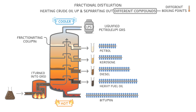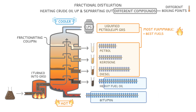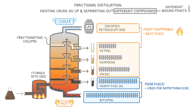If we compare these different groups or fractions, the ones towards the top, which are the shorter chains, are the most flammable, and so they tend to make the best fuels. Meanwhile, the longer chain hydrocarbons here at the bottom are often poor fuels, so are instead either used for something else, or can be broken down into smaller hydrocarbons in a process called cracking, which we'll take a look at in the next video.